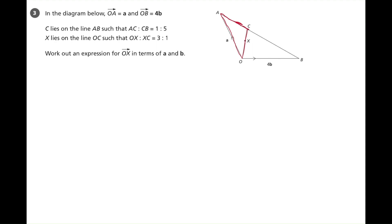So we're going to need to work out the vector AC. Now we're given a ratio relating to AC and CB. So we're basically having to look at the vector that takes you from A all the way down to B.